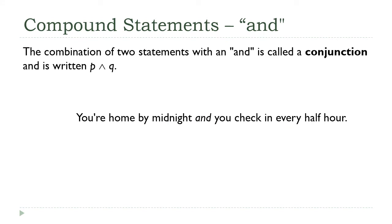So this is our second connective, an 'and'. Again, it's got a fancy name - it's called a conjunction. Most of the time I'll probably just refer to it as an and statement. And it's written with, it's kind of the opposite of our or symbol. Instead of being a V, it's an upside down V. So I'm going to translate this the same way. I'm going to use the same variables - p for 'your home by midnight,' q for 'you check in every half hour,' and I'll put the and symbol in between them.